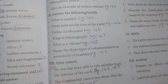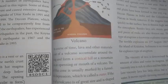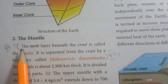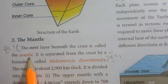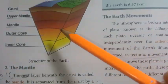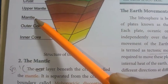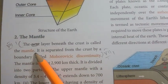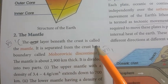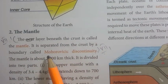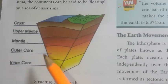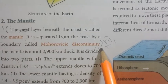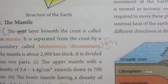What is the mantle? The layer beneath the crust is called the mantle. It is separated from the crust by a boundary called the Mohorovičić discontinuity.